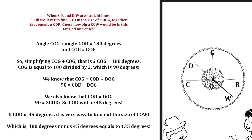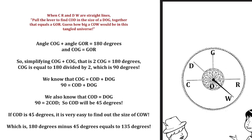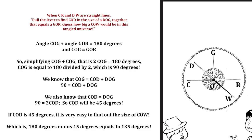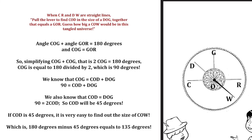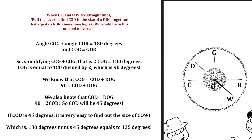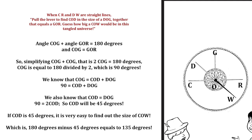If C-O-D is 45 degrees, it is very easy to find out the size of C-O-W, which is 180 degrees minus 45 degrees, equals 135 degrees.